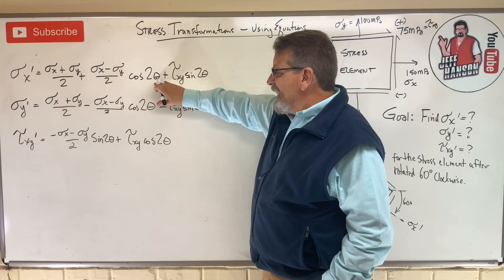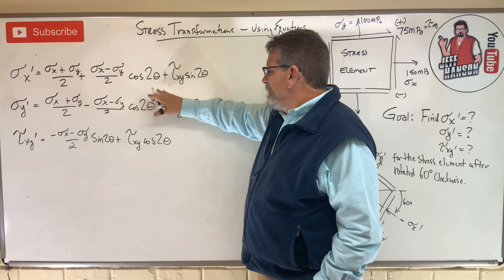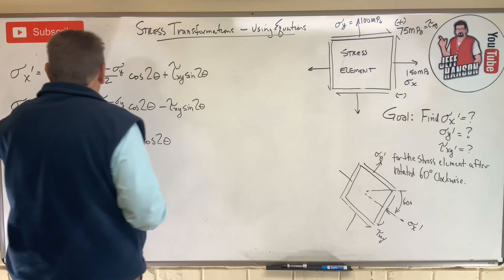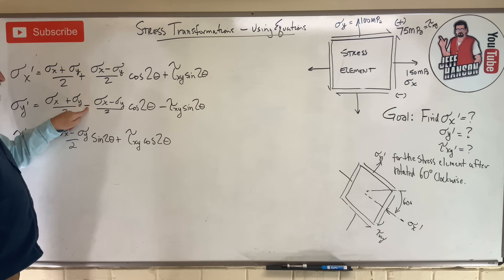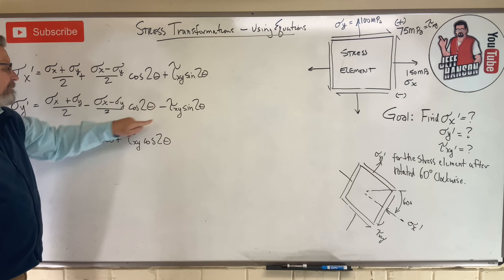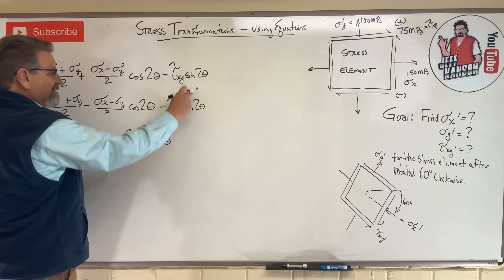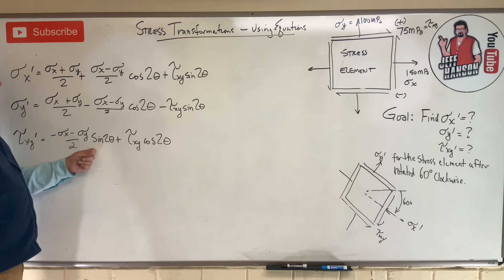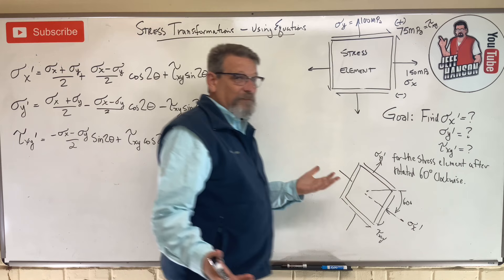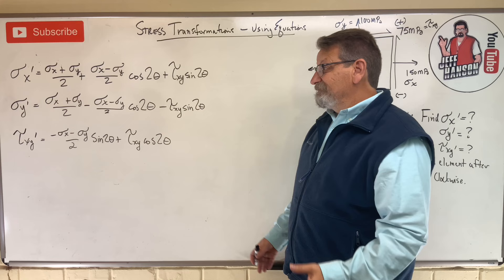The only difference between sigma x prime and sigma y prime is that one has a plus and the other has a minus in front of the second and third terms. The tau xy prime equation uses sine and cosine differently — notice it has sines where the others have cosines, and vice versa, so don't mix those up. If you have to memorize these, I hope you don't because I certainly cannot.